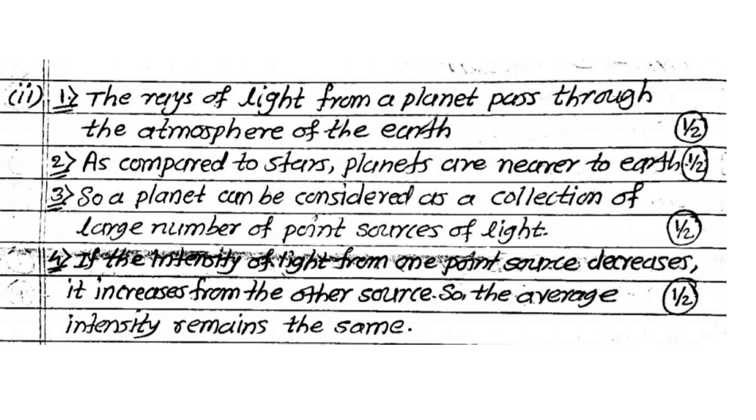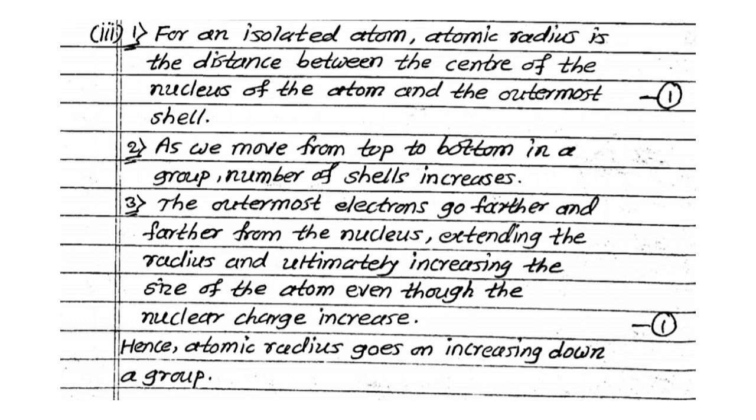Now in second give reason, planets do not twinkle related to that. So write small, small points. 4 points are there. Each point you are getting half mark. You are getting 1 mark for 1 point. Your answer is required point wise. Like third give reason is given here. Atomic radius goes on increasing down a group. 2, 3 points are given here. First point is the definition of atomic radius and related points. You are getting 2 marks for 2 points.